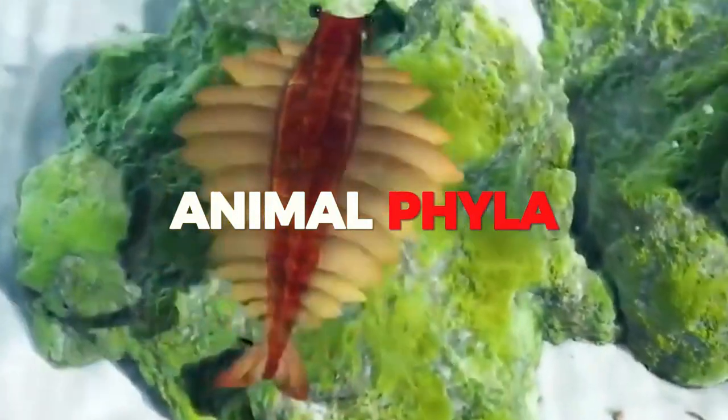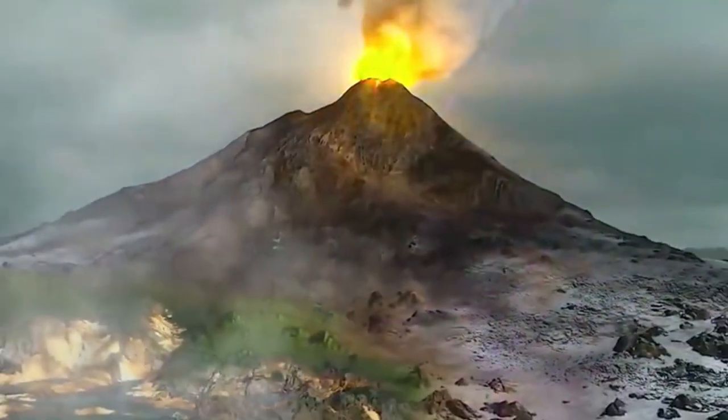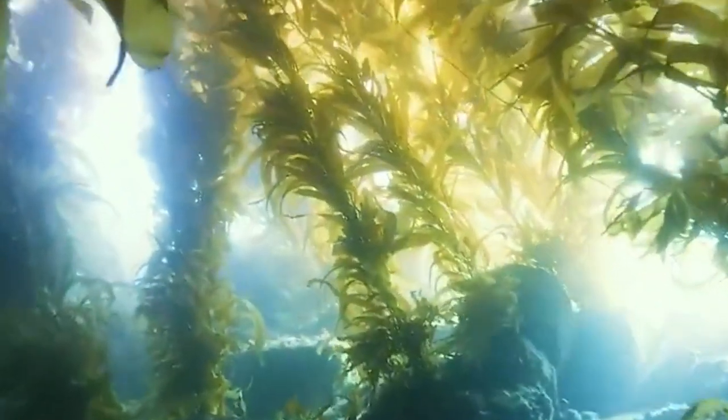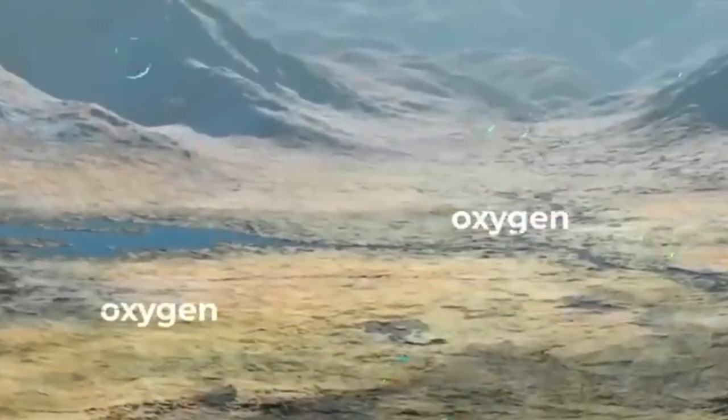This period of explosive diversification led to the emergence of the first recognizable animal phyla. The oceans, once relatively devoid of complex life, were now home to an intricate tapestry of creatures, each carving out its niche in the evolutionary drama. Fantastical forms like the trilobites, the brachiopods, and early mollusks flourished in this newfound abundance.